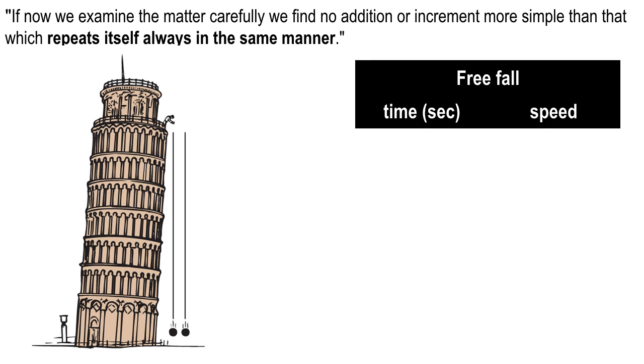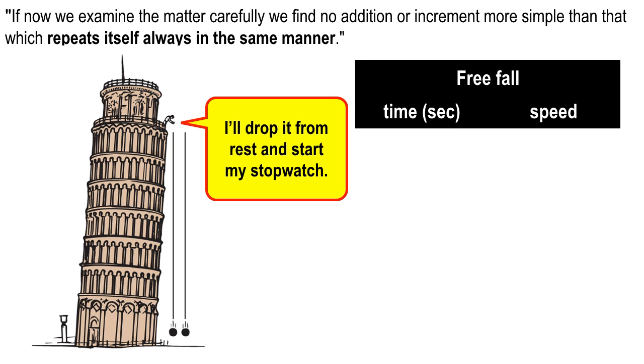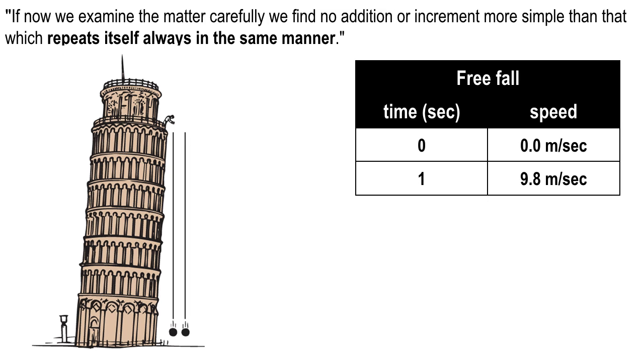Position and speed are changing. And Galileo described it this way, continually acquiring new increments of speed. Now, here's another thing that he wrote. If now we examine the matter carefully, we find no addition or increment more simple than that which repeats itself always in the same manner. And he attributed that to free fall. So let's make a little table of time and speed. We'll assume that his lab assistant is down at the bottom of the Tower of Pisa, and he's got a radar gun. Sweet. And hopefully nothing breaks. He's down there. No chairs are breaking or anything like that. And he's making it. And so Galileo says, all right, I'm going to drop it from rest. And I'm going to start my stopwatch.